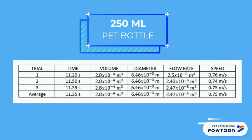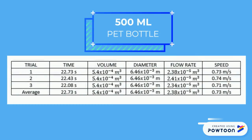The first table shows the flow rate and the speed of the water coming out in the outlet, done with a 250ml pet bottle. While the second table illustrates the flow rate and the speed of the water coming out in the outlet, done with a 500ml pet bottle.